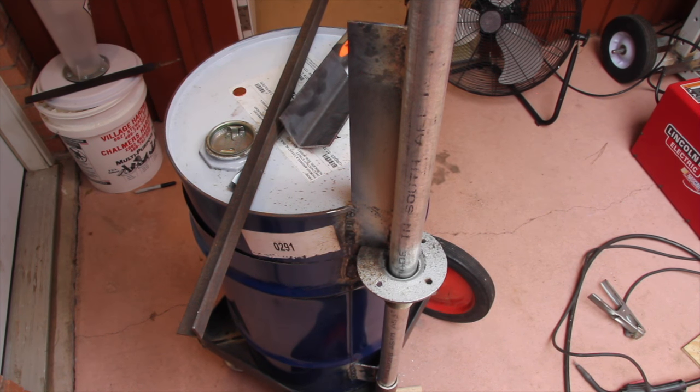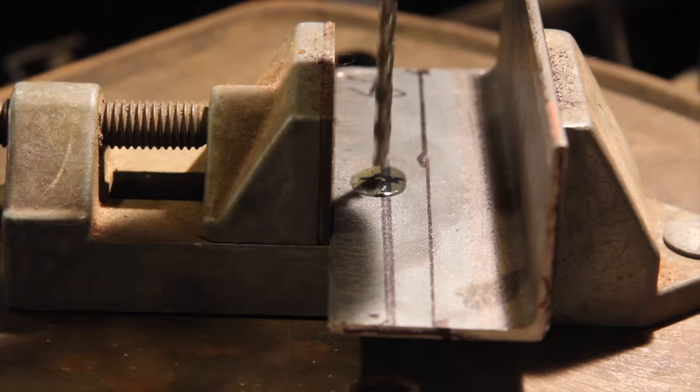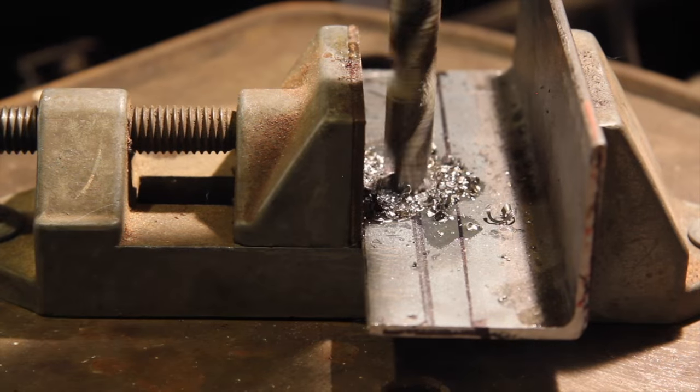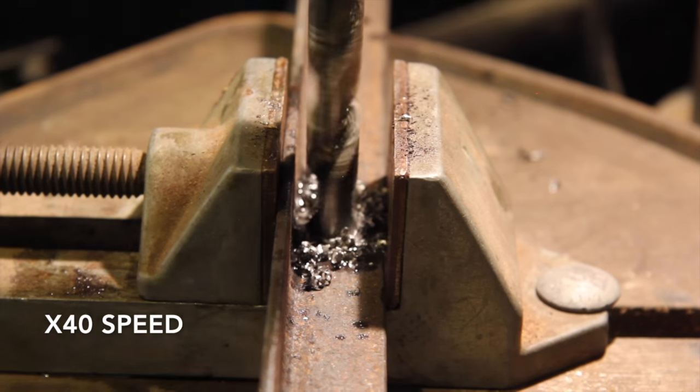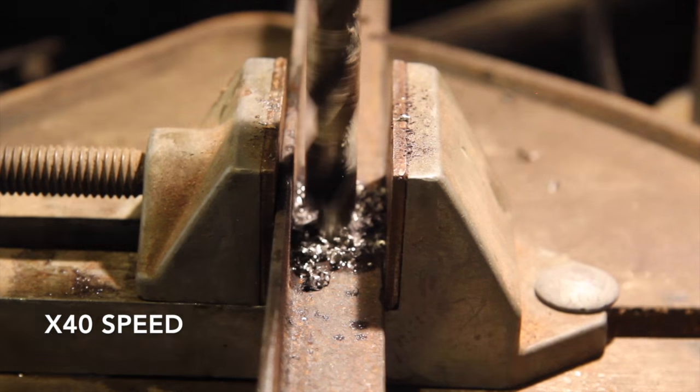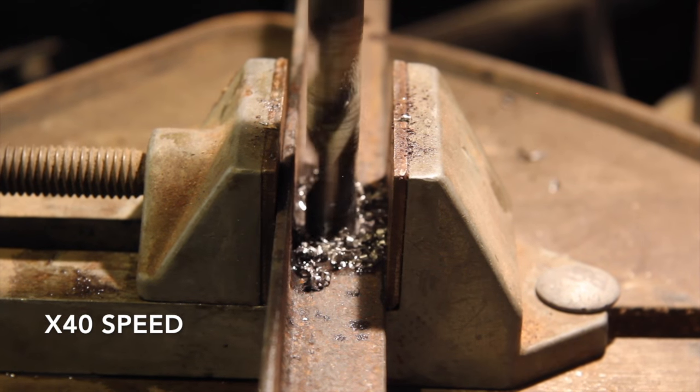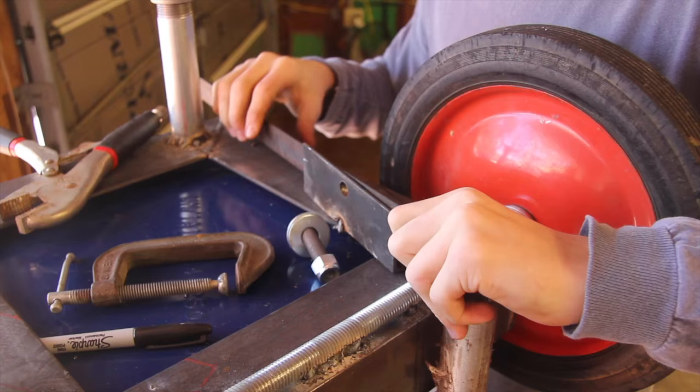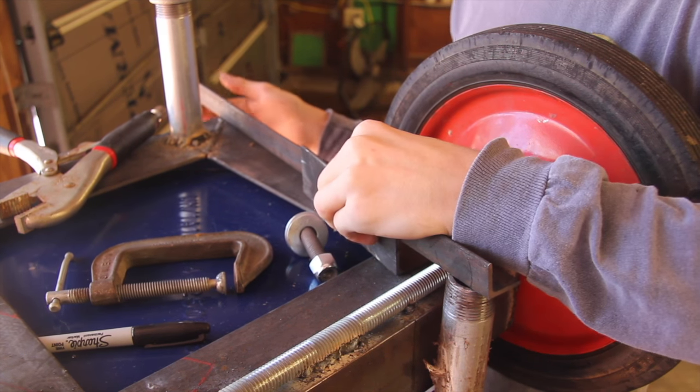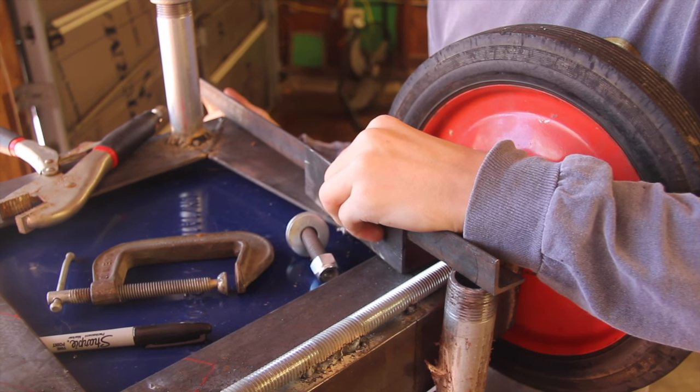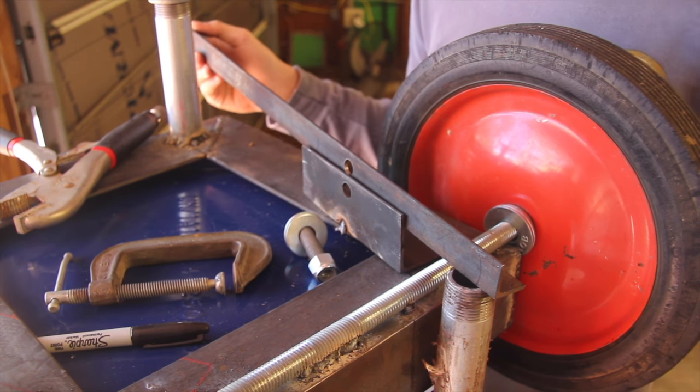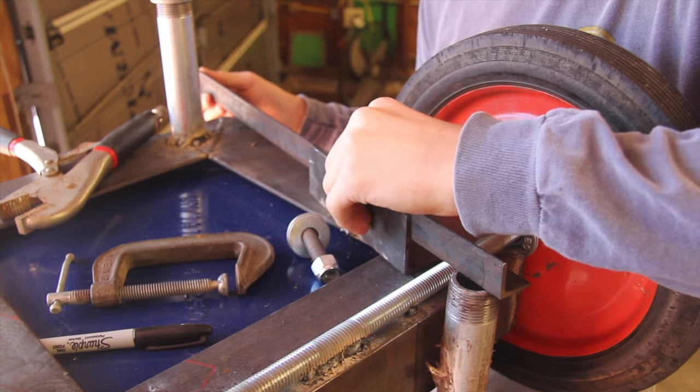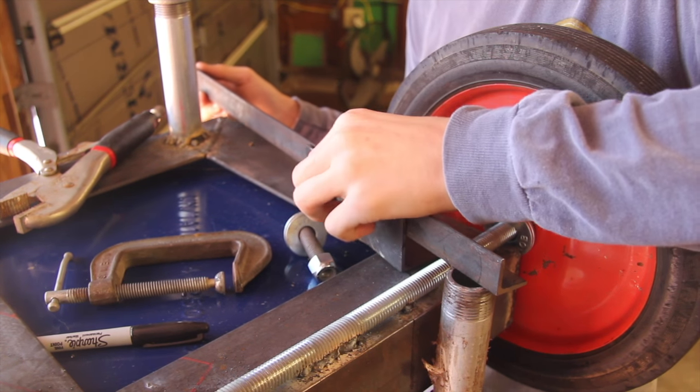You've got to be careful with those little beads because they can just plug up your whole system. The whole mechanism will work as I push down on this, or up because it's upside down. It'll push up on this pipe and then lift the lid. So now we've just got to weld this to the base and bolt these together.